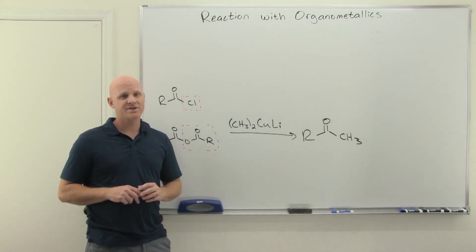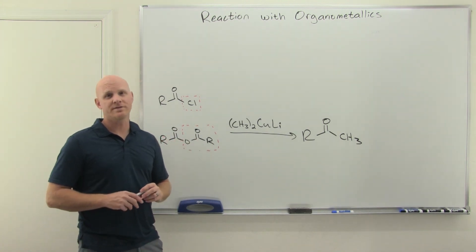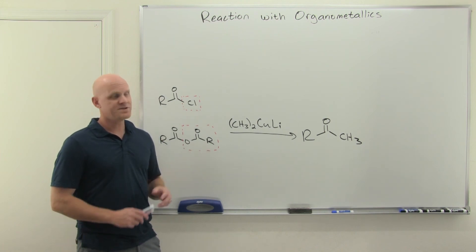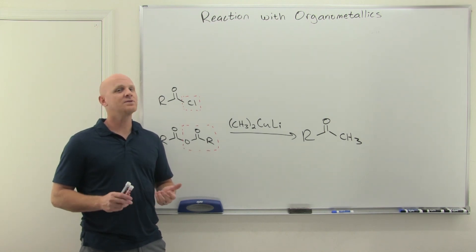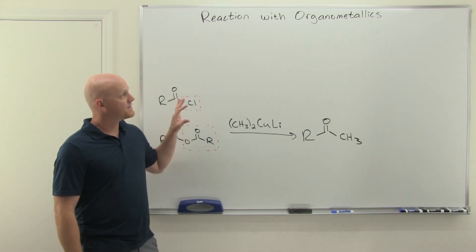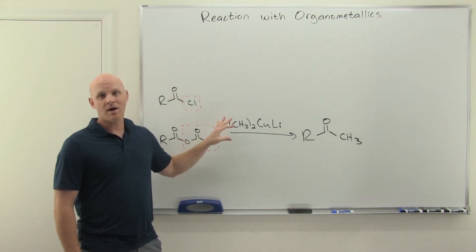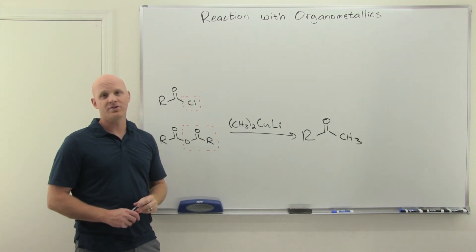That's the summary of the reaction of the organometallics with your carboxylic acid derivatives. Now, if you found this lesson helpful, would you consider giving me a like and a share? Best thing you can do to make sure other students get to see this lesson as well. If you're looking for the study guide that goes to this lesson, if you're looking for practice problems on carboxylic acids and their derivatives, check out my premium course on chadsprep.com.